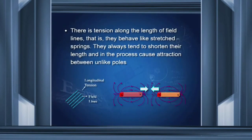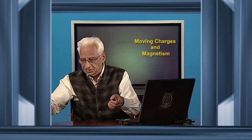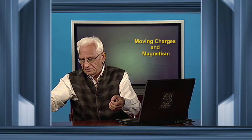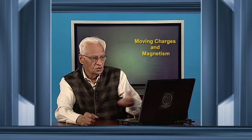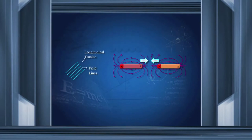Another important property is that there is tension along the length of field lines. A field line acts as a stretched spring — if released, it tends to shorten. They always tend to shorten their length and in this process cause attraction between unlike poles. The field lines between a south pole and a north pole tend to shorten their length, giving rise to a force of attraction between the two magnets.